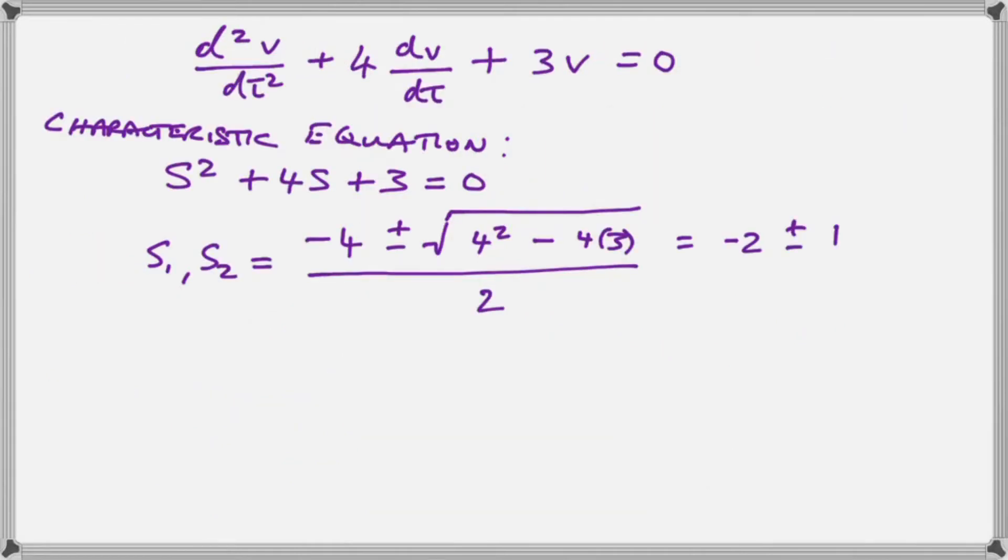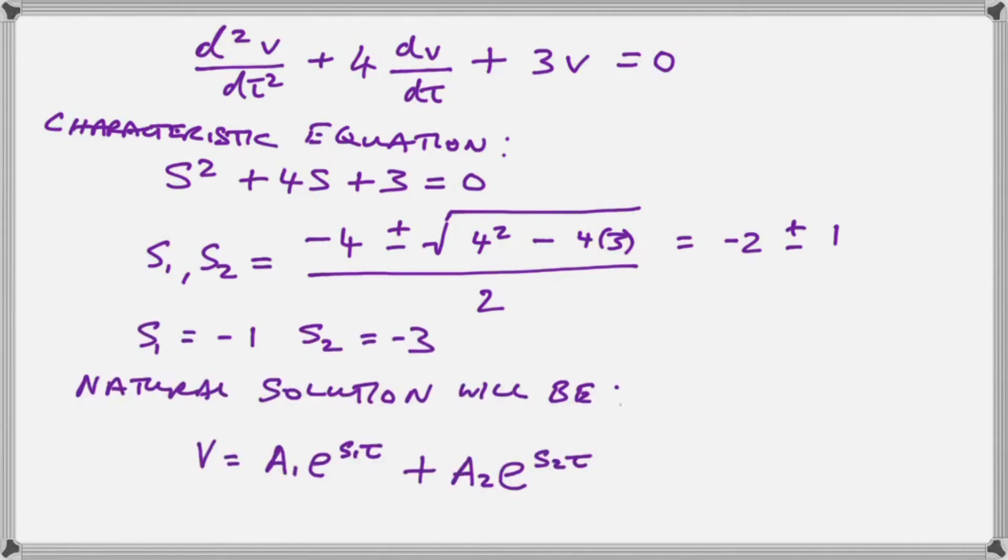And we write our characteristic equation again and solve it using our quadratic formula. And lo and behold this one comes out as two real numbers, two separate and distinct real roots. Our real roots are minus one and minus three.